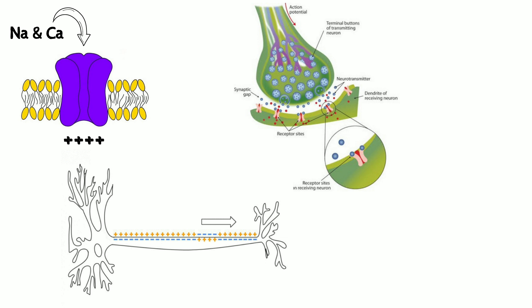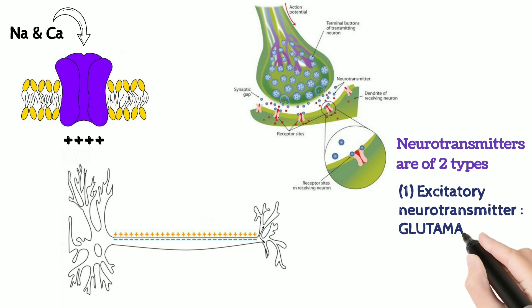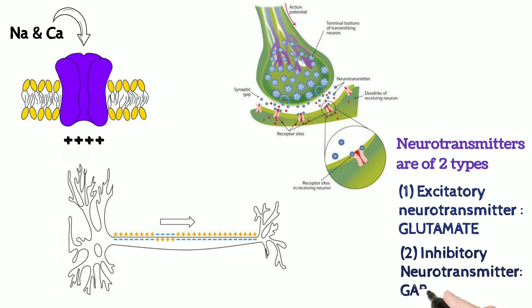Since here we are concerned with epilepsy, we will consider only brain functioning. So there are two major types of neurotransmitters: the excitatory neurotransmitter, which is glutamate, and the inhibitory neurotransmitter, which is gamma-aminobutyric acid or GABA.